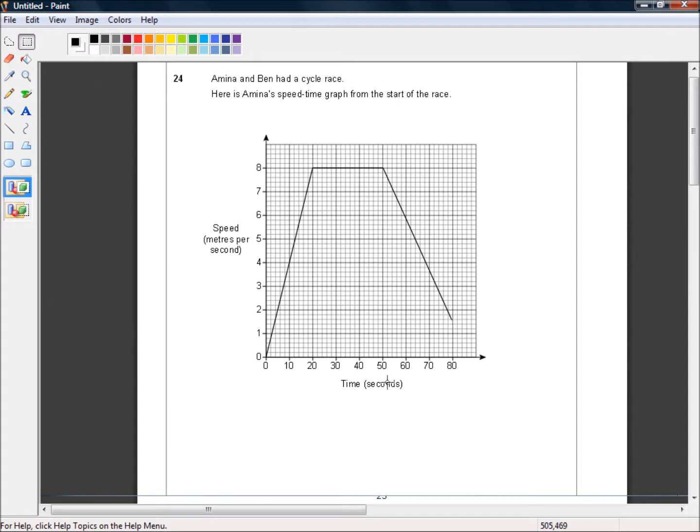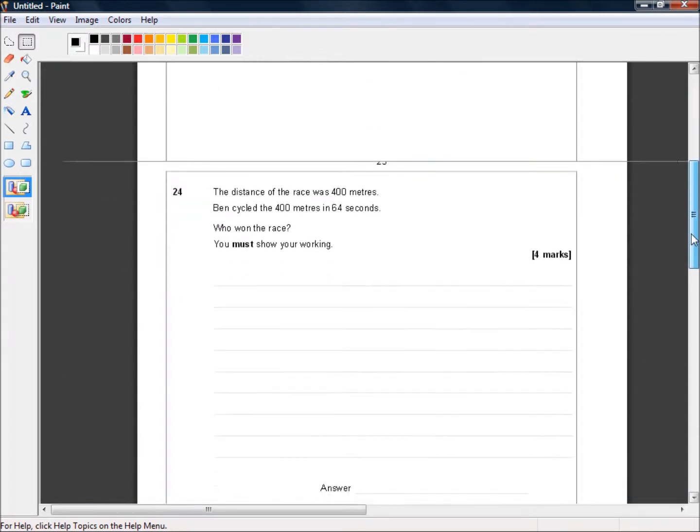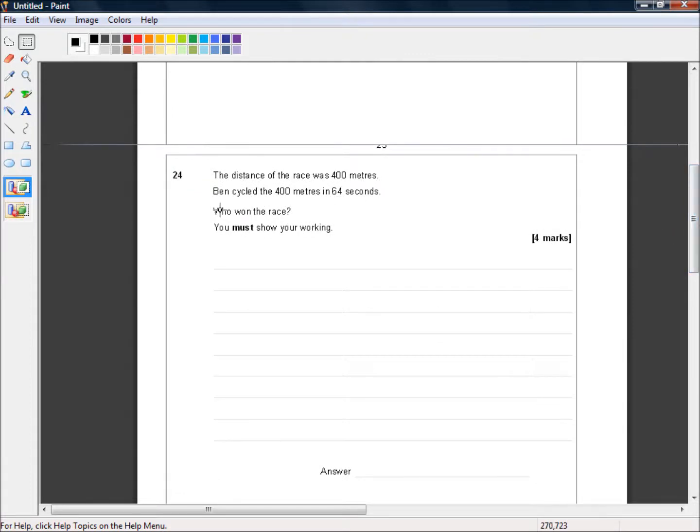Okay, so this is what Amina's done. It says the distance of the race was 400 metres. Ben cycled the 400 metres in 64 seconds. Who won the race? You must show your working.